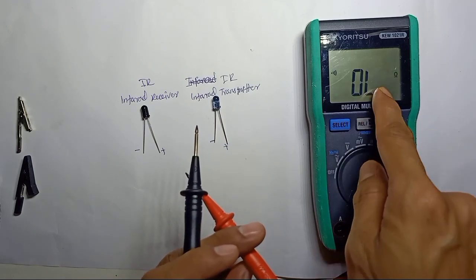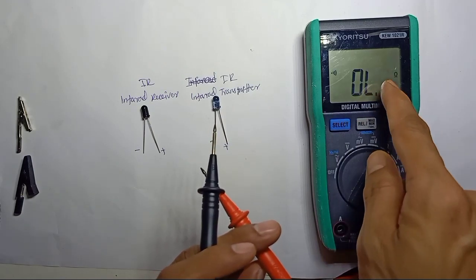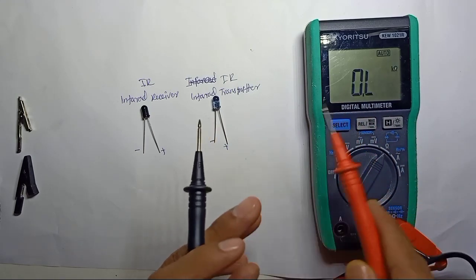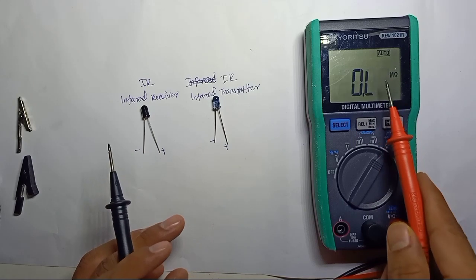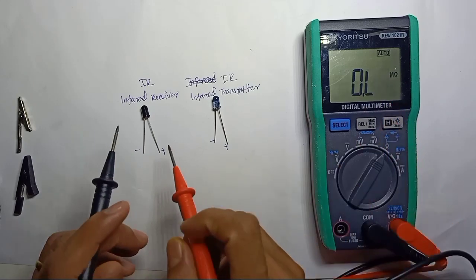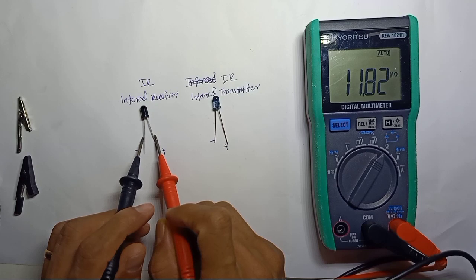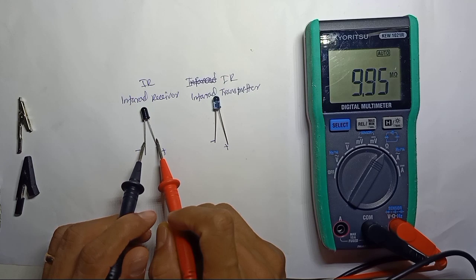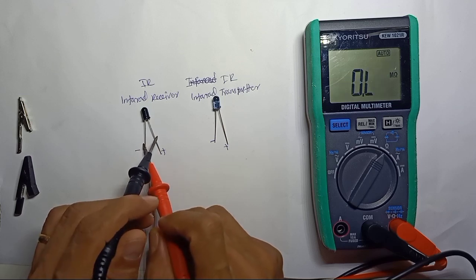I'm selecting the ohms mode. Now when I use red positive here and black negative here, I have 9.95 megaohms. If I reverse, I don't get any value.